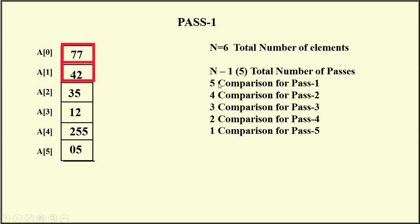During Pass 1 we require 5 comparisons, because after Pass 1 one element will be sorted — the largest element goes to the last position. In Pass 2 we require 4 comparisons, Pass 3 requires 3 comparisons, Pass 4 requires 2, and Pass 5 requires just 1 comparison. In general, for n elements we require n minus 1 passes.